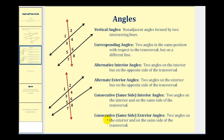And finally we have consecutive or same side exterior angles. These are two angles on the exterior and on the same side of the transversal. So the consecutive exterior angles would be angle two and angle eight, as well as angle one and angle seven.